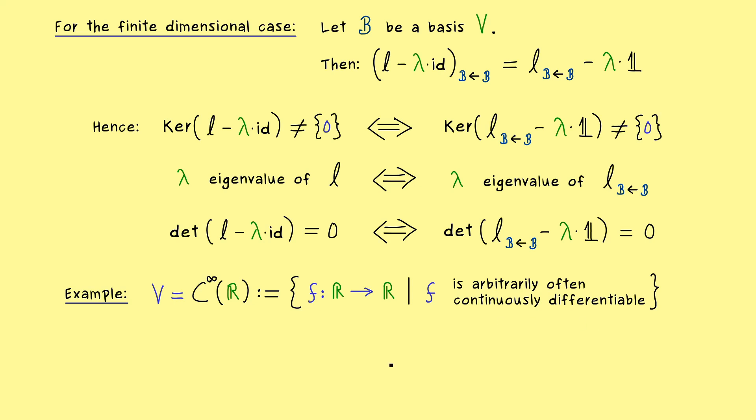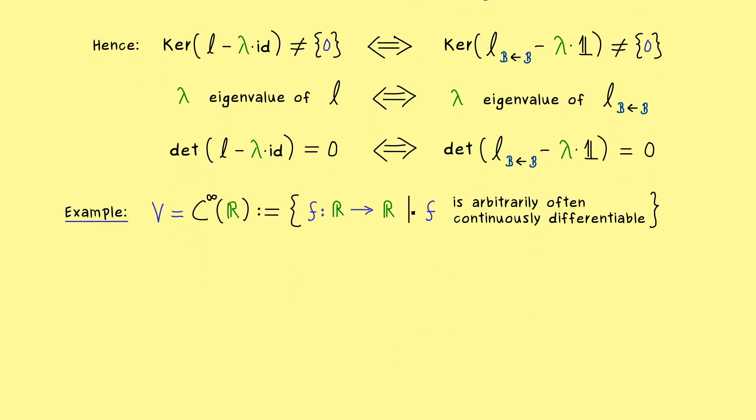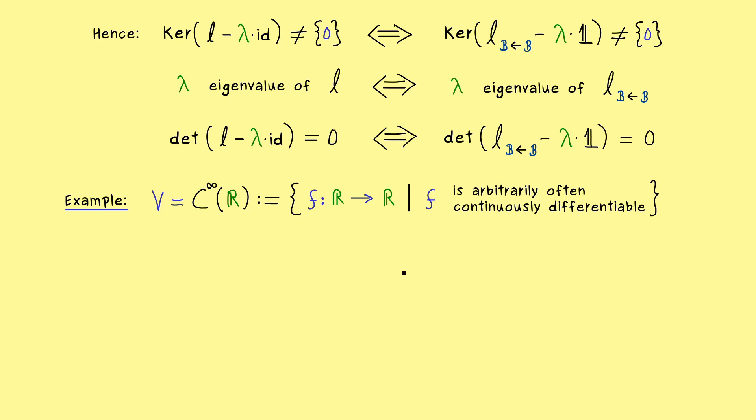So for example all polynomials lie in this space for sure. And therefore we also already know that this is not a finite dimensional vector space. However we already know a very nice linear operation on this vector space. Namely the differentiation. This means we take such a function f and send it to its derivative. This is a nice general linear map and we already use that a lot while calculating with polynomials.